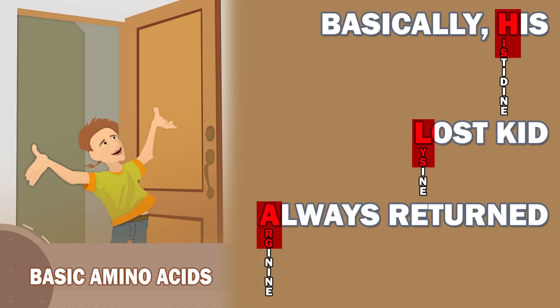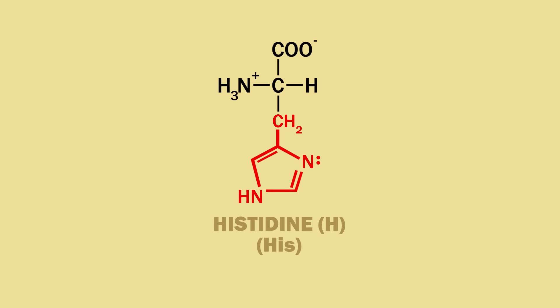Let's look at histidine — not much we can do but memorize it. Once we memorize histidine, it is very easy to remember the other two basic amino acids. We can change histidine to lysine: first, remove the two double bonds and the bond between the N with the lone pair and the carbon on its top left. Next, remove the NH. Change the N with the lone pair to an NH3+. This is lysine.